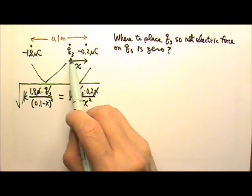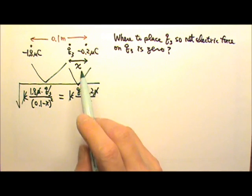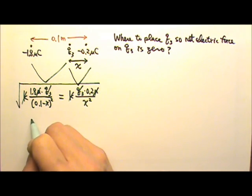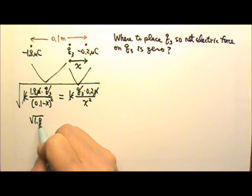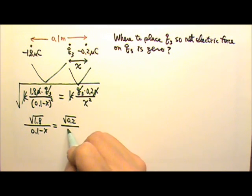Because I know for sure Q3 has to be placed over here, the x must be a positive number. So I can just take the square root. And then so I have square root of 1.8 divided by 0.1 minus x equals to the square root of 0.2 divided by x.